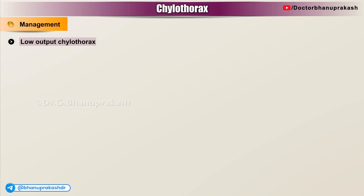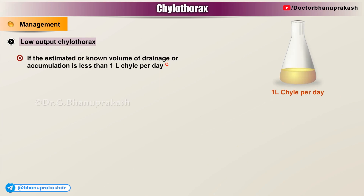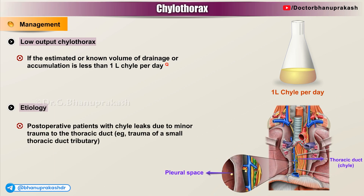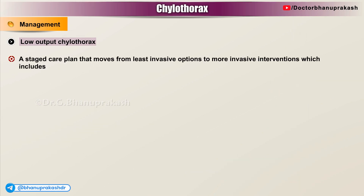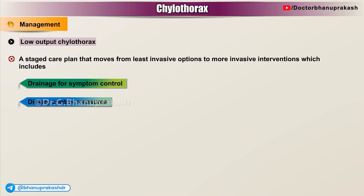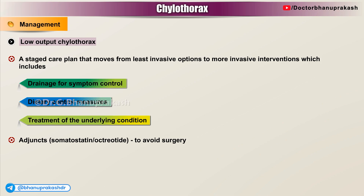Low-output chylothorax: Patients are considered to have low-output chylothorax if the estimated or known volume of drainage or accumulation is less than 1 liter of chyle per day. Many patients with medical reasons for their chylothorax and post-operative patients with chyle leaks due to minor trauma to the thoracic duct fall into this category. In general, these patients benefit from a staged care plan moving from least invasive to more invasive interventions, including drainage for symptom control, dietary control measures, treatment of the underlying condition, and adjuncts such as somatostatin or octreotide.